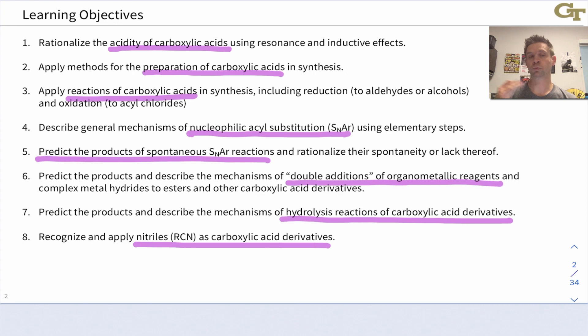In this unit we're going to look at the carboxylic acid functional group first, focusing on the origins of its acidity and the effects of substituents, resonance, and inductive effects on the acidity of carboxylic acids.